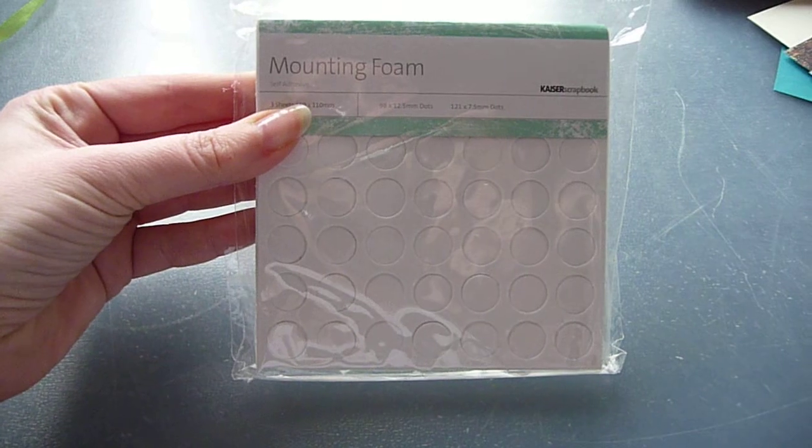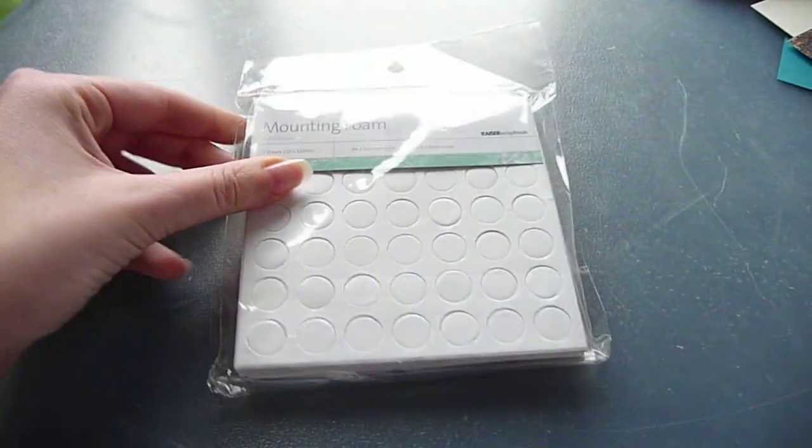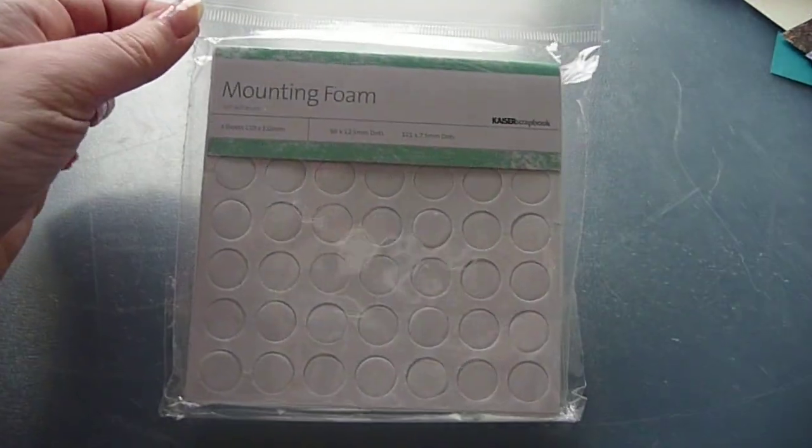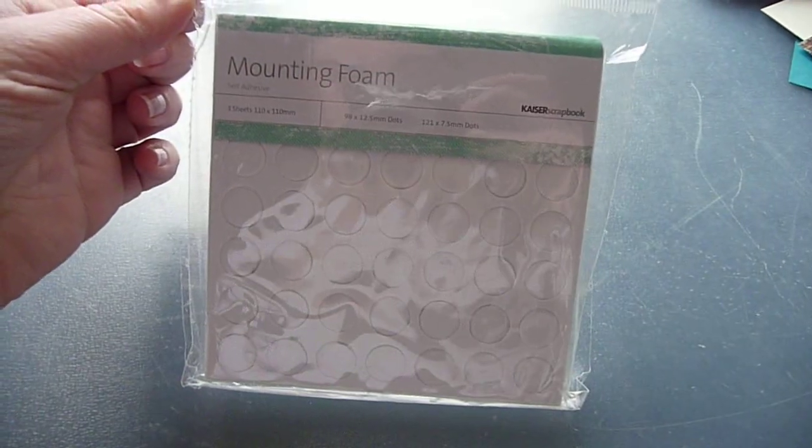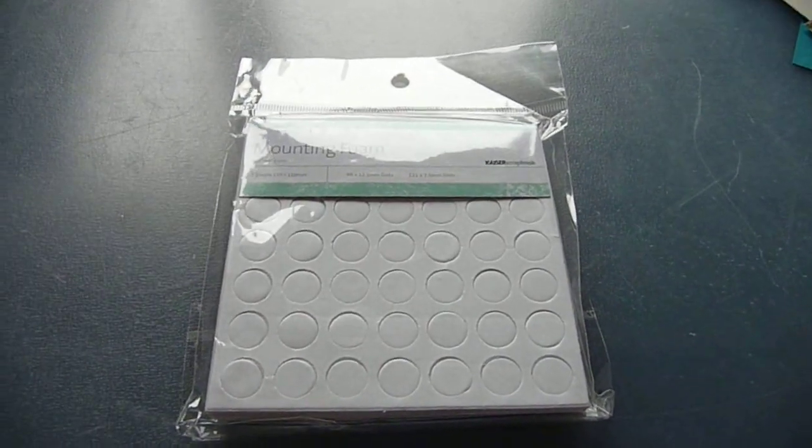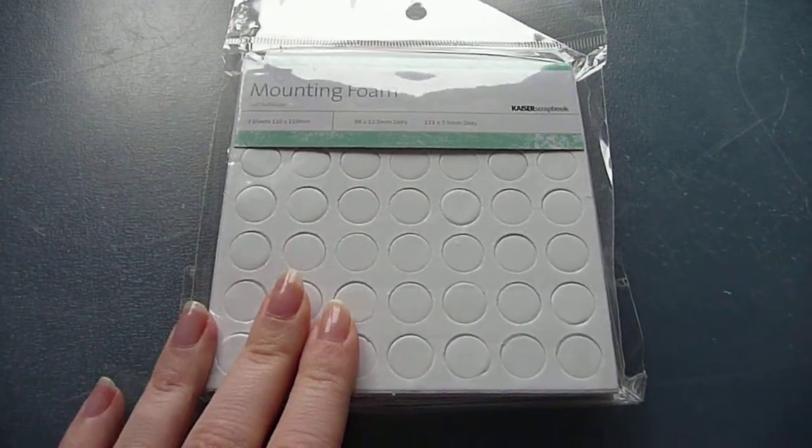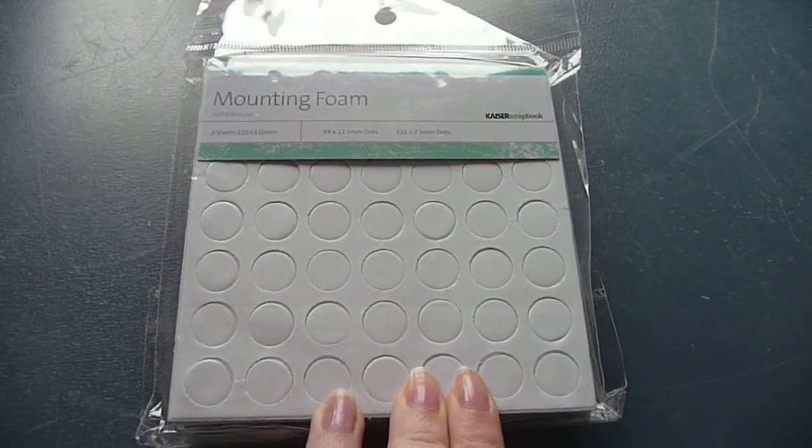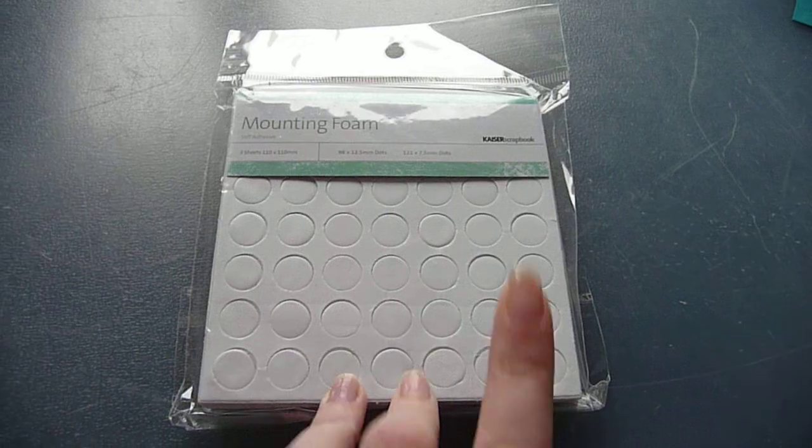And this is by Kaiser. I haven't used these before. Cards and Scraps actually got them for me because I asked for a bit of bigger foam squares. So these are the ones that they came up with. They're round. They're not squares. They would usually be, at least the ones that I usually use. So I'll have a look. I'll use these and I'll keep you posted on what they're like.